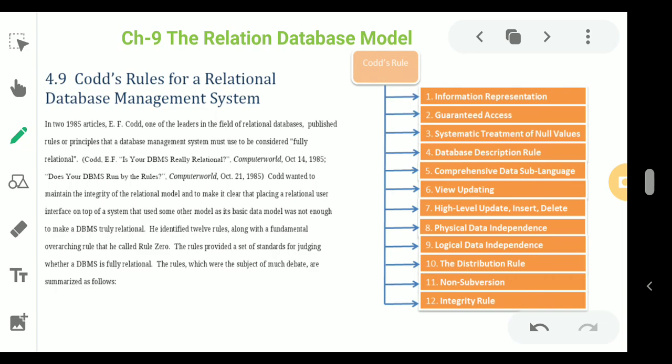Rule 7 is the High Level Insert, Update, and Delete Rule. Data can be retrieved from a relational database as a set constructed from multiple rows and multiple tables. This rule states that insertion, update, and deletion operations should be supported for any retrieval set, not just a single row in a single table — they can be applicable to all rows and columns in a table.